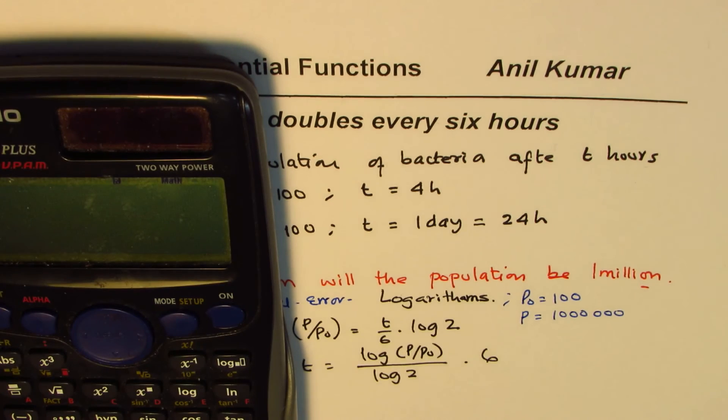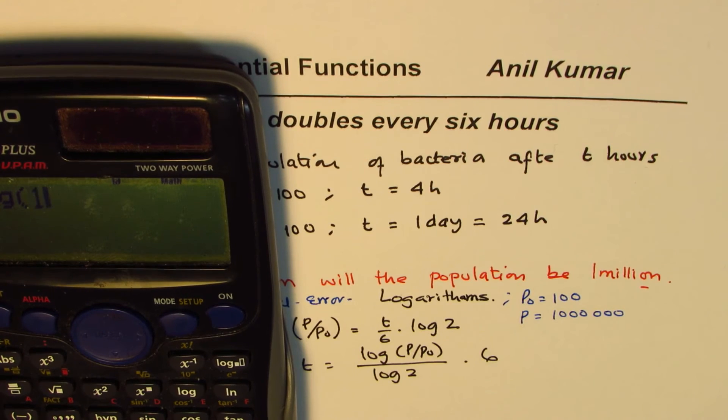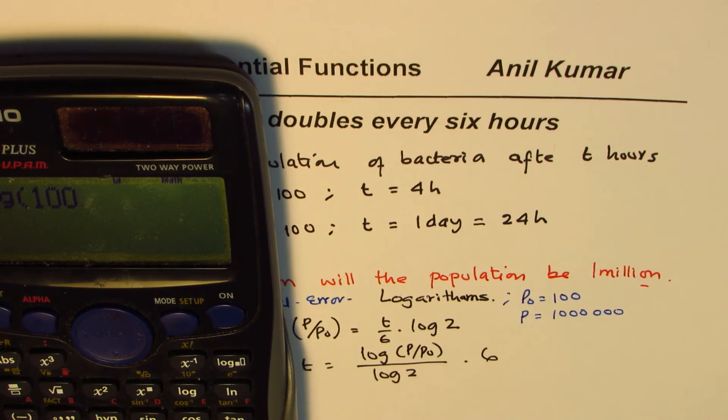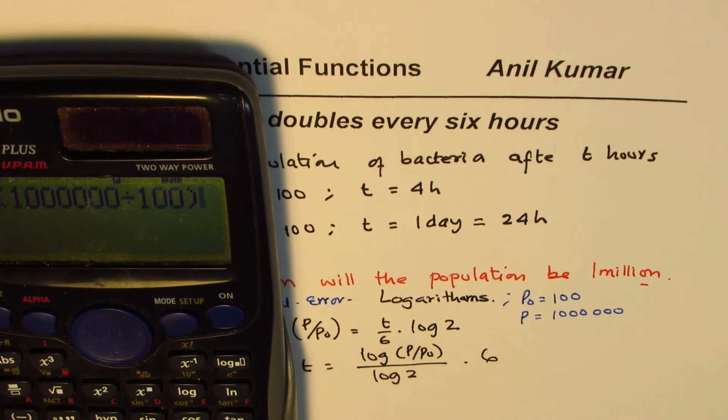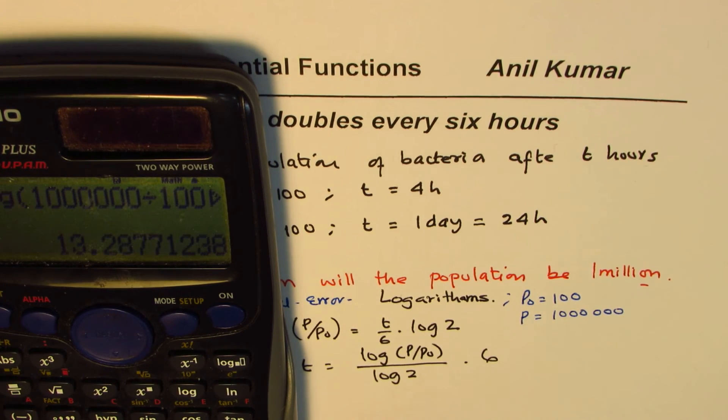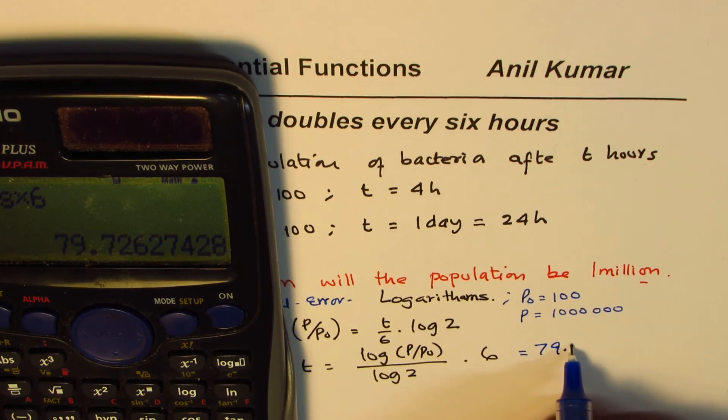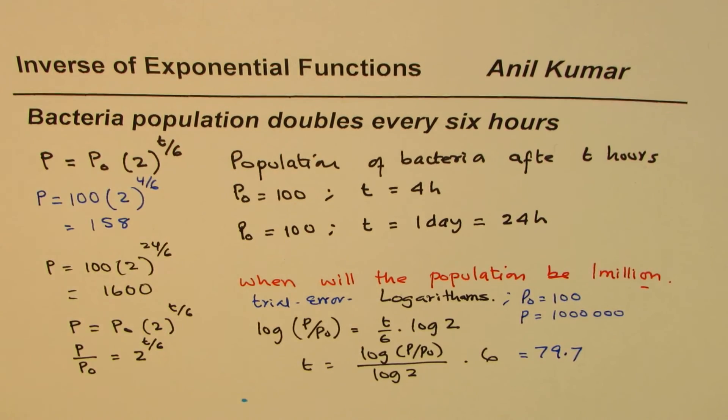So let's calculate this value. What we have here is log within bracket, we'll write 1000, 1000 divided by 100. So that becomes log of this. We'll divide this expression by log of 2, which is log of 2. Let's find this out and then we'll multiply this by 6.